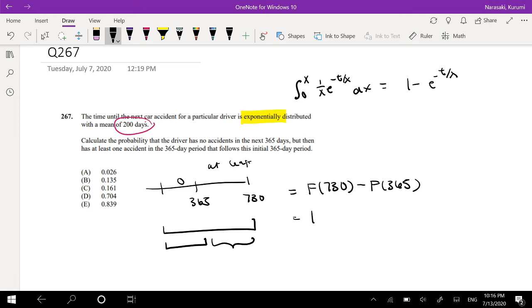So again, plugging it into our formula, this is equal to 1 minus e to the negative 730 over 200, which is our mean, minus 1 minus e to the negative 365 over 200.